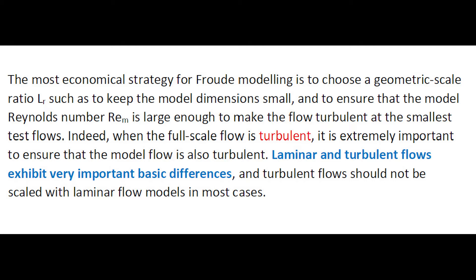The most economical strategy for Froude modeling is to choose a geometric scale ratio LR such as to keep the model dimension small, and to ensure that the model Reynolds number is large enough to make the flow turbulent even at the smallest test flow. Indeed, when the full-scale test flow is turbulent, it is extremely important to ensure that the model is also turbulent. Laminar and turbulent flow exhibit very different behaviors.